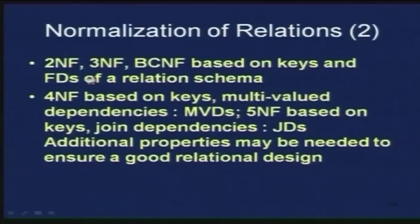There are different types of normal forms and they are progressively more stringent in constraints. You have first normal form, then second normal form — which is first normal form plus something — then third normal form, which is second normal form plus something, and so on. 1NF is based on primary keys; 2NF, 3NF, and BCNF (Boyce-Codd Normal Form) are based on keys and functional dependencies. Fourth normal form is based on multi-valued dependencies, and fifth normal form is based on keys and join dependencies.